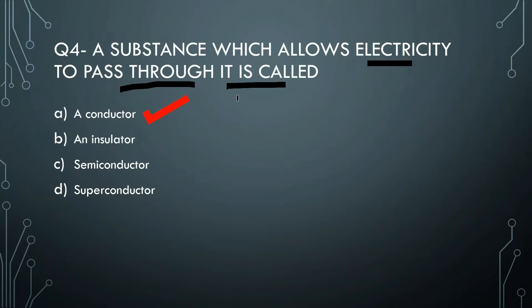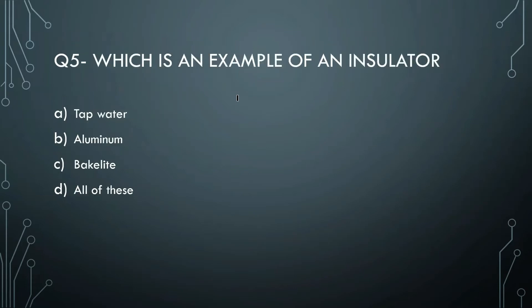Now let's learn about conductors and insulators. Conductors include metals and aluminum. An insulator is a material that does not pass electricity, while a conductor is a material that does pass electricity.